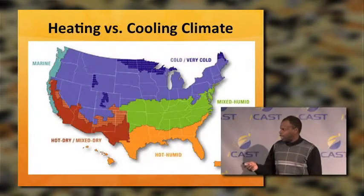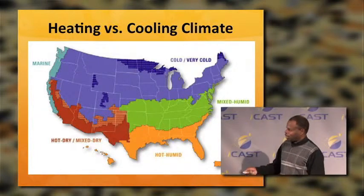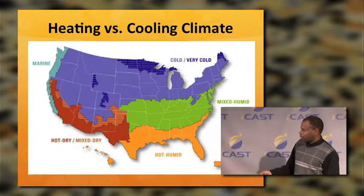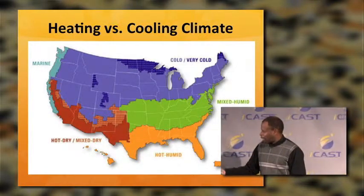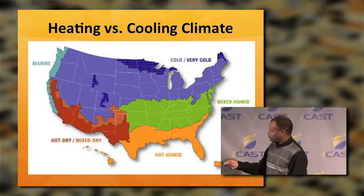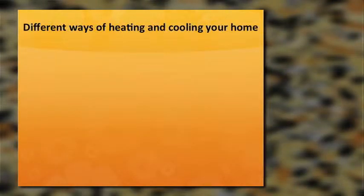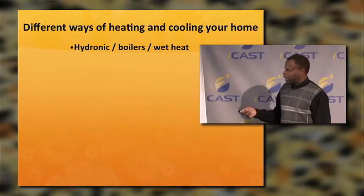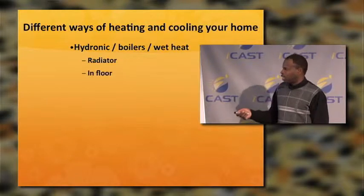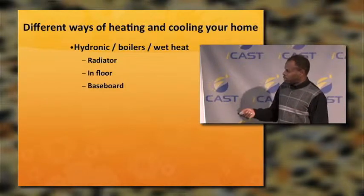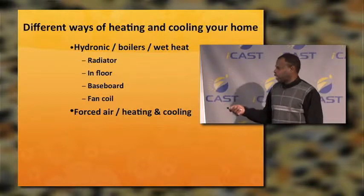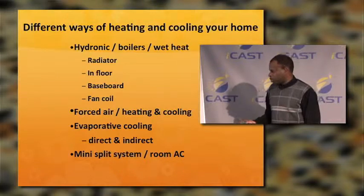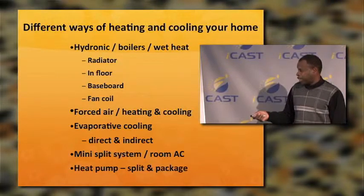This is a map of the heating versus the cooling climate. On the west coast northwest, we have the marine climate. Hot-dry mixed down here, hot-humid, mixed-humid, and cold and very cold. Different ways of heating and cooling your home include hydronics, boilers, wet heat which is steam heat — so we have radiators, end floor, baseboards, fan coils — forced air heating and cooling, evaporator cooling direct and indirect, mini-split system, room AC, heat pumps, and split package.